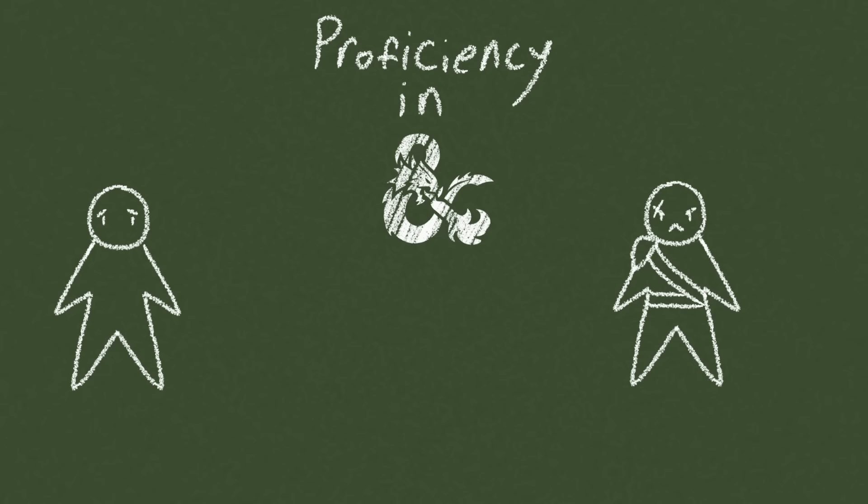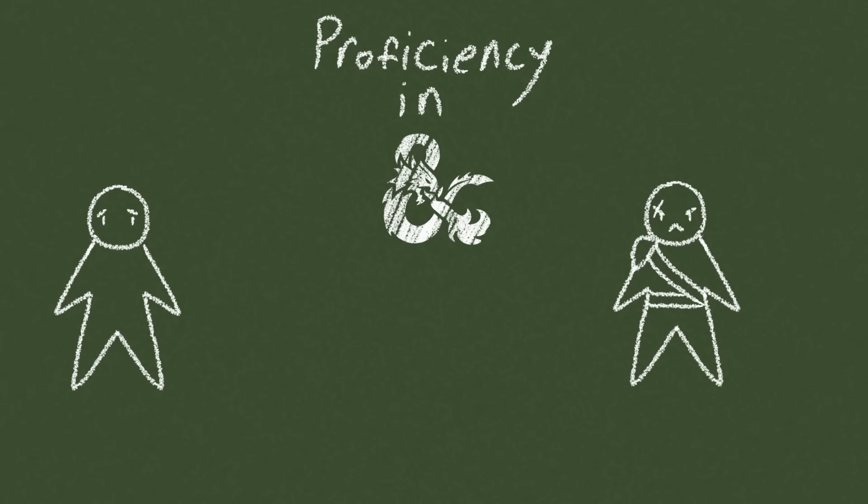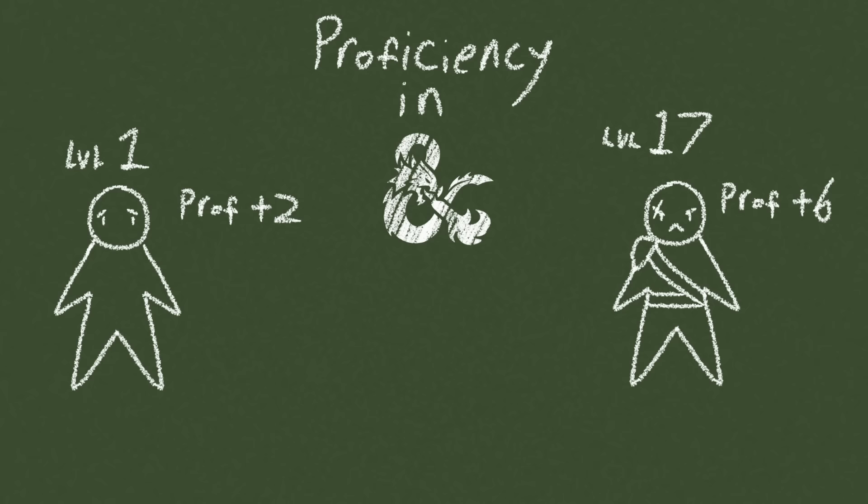in D&D 5th edition, proficiency is a static number determined by your level, increasing occasionally when you level up from plus 2 to plus 6. Easy, simple, straightforward. Which undoubtedly has its merit. However, I'm going to show you how this simple number doesn't support the zero to hero fantasy so common at our tables.